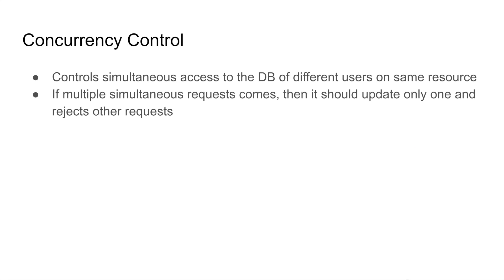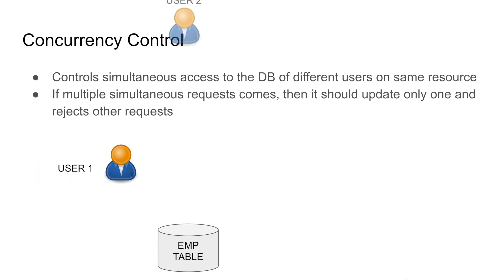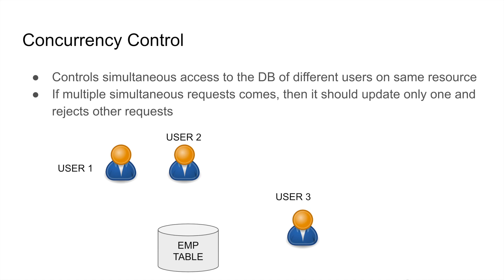Concurrency means two or more events happening at the same time. Likewise, in any application, two or more users could be able to access or modify a single record. For example, I have an employee table in my database and there are two users for this application who are trying to access the second record simultaneously, trying to update different data on the single record.